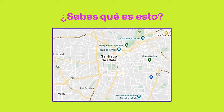¿Sabes qué es esto? ¿Has visto alguna vez este dibujo o esta imagen? Esto es un plano y es el plano de Santiago de Chile. ¿Te fijas que hay líneas de colores y además hay símbolos que tienen colores azul, verde y además nos indican el nombre de esos lugares? ¿Has visto un plano como este cuando has ido al zoológico, o a un parque de diversiones, o en el metro? Sí, muchas veces hemos visto planos y hoy aprenderemos más sobre ellos.